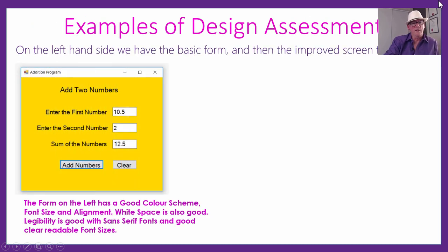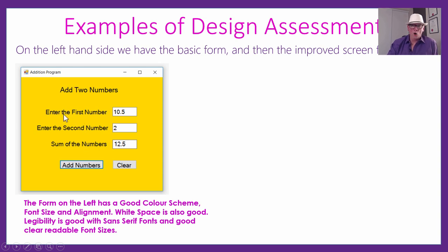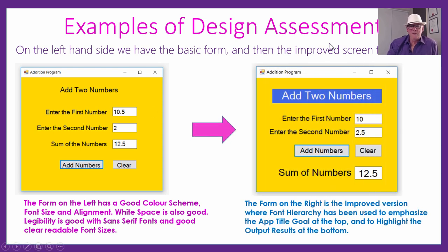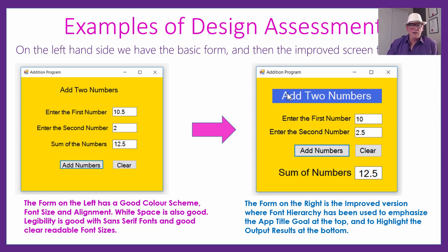Let's have a quick look at some design assessment. This was the basic form for the adding two numbers program — pretty good: okay color scheme, good font size, simple clear easy-to-read font, not squiggly old English. But it could be improved and has been: it's nice to have a big heading at the top showing the goal of the app, and in big letters at the bottom showing the answer when you add those two numbers. That's really nice design — kind of 10 out of 10. The simpler version is maybe 7 out of 10.